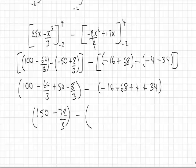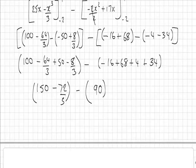take away 68 and 34 is 90, 102 plus 4 is 106, minus 16 is 90. So we're going to be left with 150 minus 90, which is 60, minus 72 over 3.